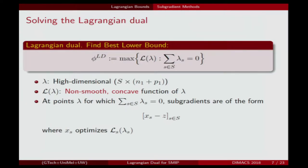This is high-dimensional because we have a vector for every one of our scenarios. It's a non-smooth concave function of lambda, but it's easy to get subgradients for feasible points once we've solved all those scenario subproblems.